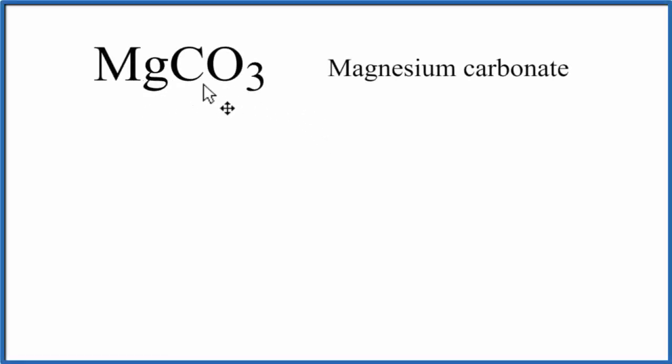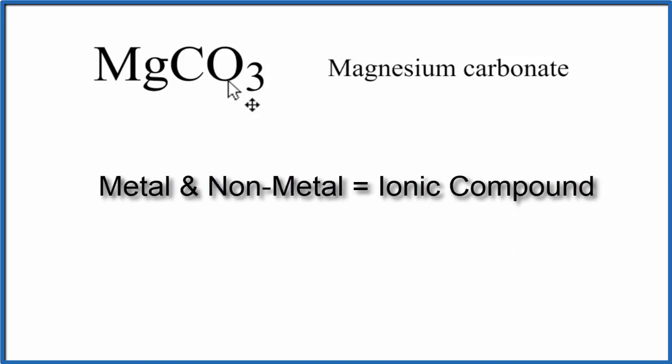To draw the Lewis structure for MgCO3, magnesium carbonate, we first need to realize that magnesium is a metal, and then CO3, that's a group of non-metals. It's the carbonate polyatomic ion. So we have a metal and some non-metals. That means this is an ionic compound.